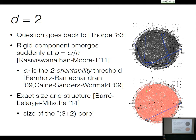That was proved by Fernholz and Ramachandran, and also Cain, Sanders, and Wormald. Kasavaswanathan, Chris Moore, and I proved that when you go above C₂, the three-core becomes rigid with high probability, and then the rigid component builds on top of that. We conjectured an exact structure and size but couldn't prove it. Then smarter people came along, using similar ideas but much stronger tools about controlling the orientability process, and gave exact limit theorems for the size of this rigid component.